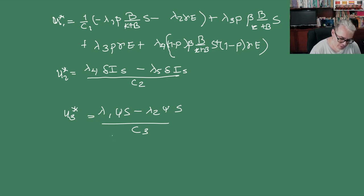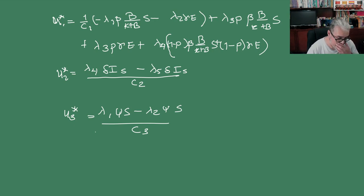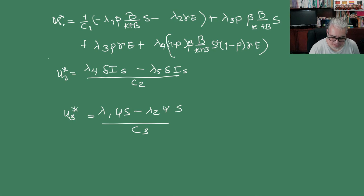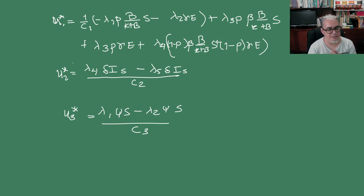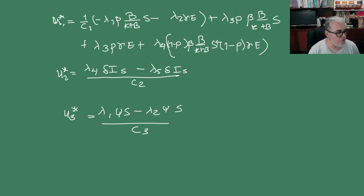Esta es la forma de plantear el problema. Pero paremos aquí por hoy y continuamos a partir de estas expresiones en una próxima sesión. Vamos a acabar de plantear el problema de control y ver qué podemos decir acerca de él una vez que planteamos el Hamiltoniano en términos de estas cosas. Nos vemos en una siguiente sesión.